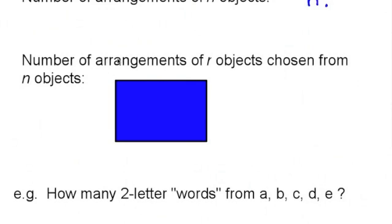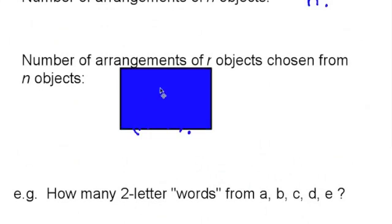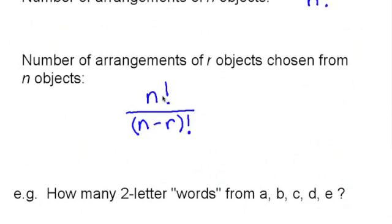Generalising this, if we've got r objects chosen from n, we can express that as n factorial over n take r factorial.